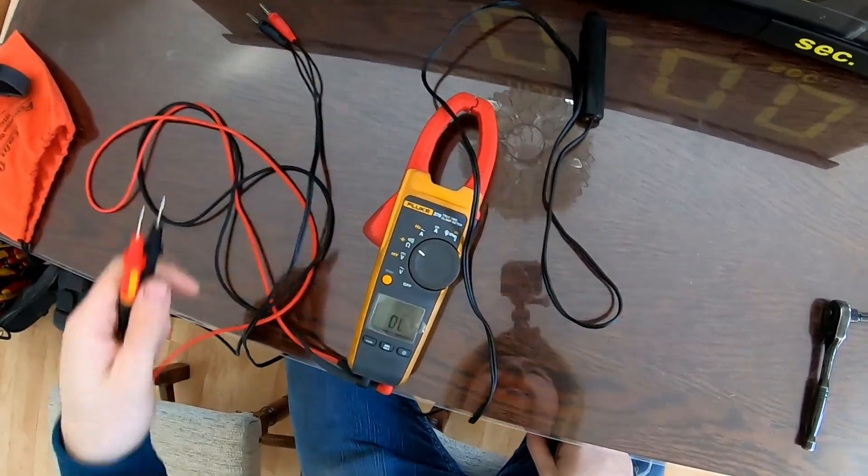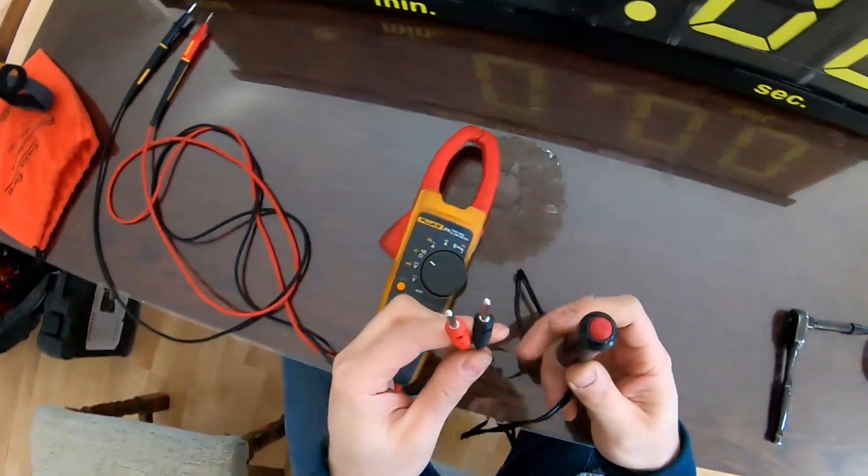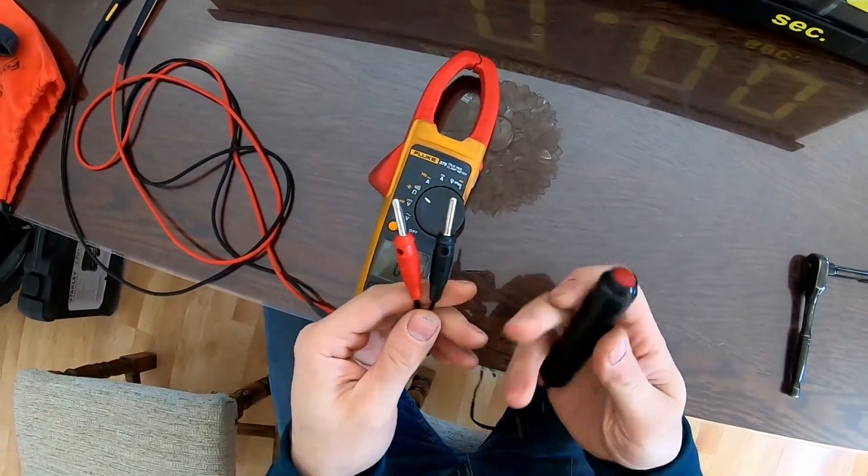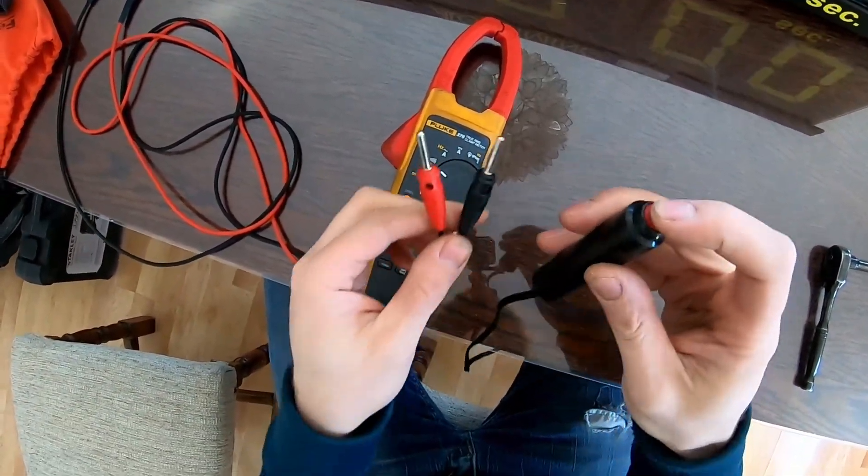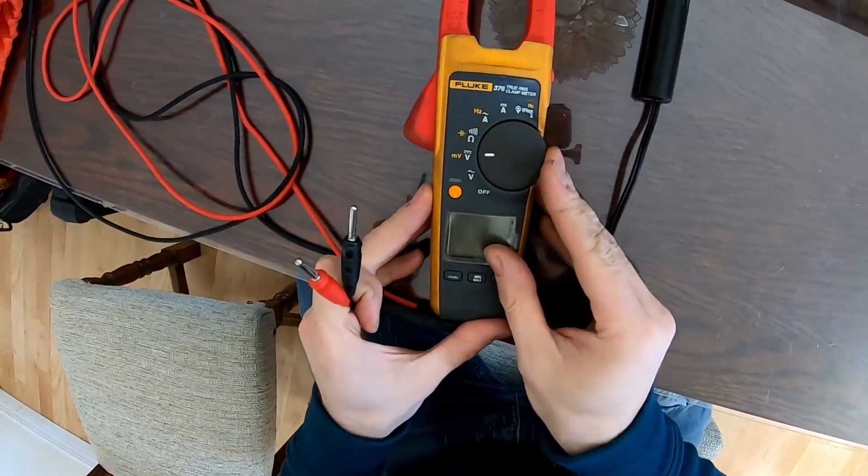All right so we're gonna start by testing continuity on the plunger to make sure that the plunger is working. The plunger is pretty simple. The button just connects these two wires together when you push it.